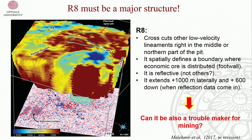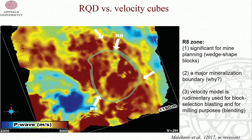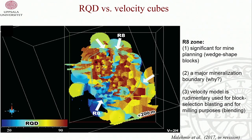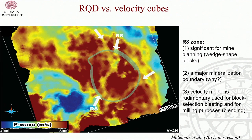The R8 reflector is a major fracture system cutting the pit and going down to 600 metres depth. We asked Bulletin for information but nothing came, so we resorted to googling Kvitsa open pit photos. Looking at the RQD model alongside the velocity model, you can clearly see the R8 reflector and related features in both datasets, confirming the correlation, though the clarity of the tomogram is much superior.